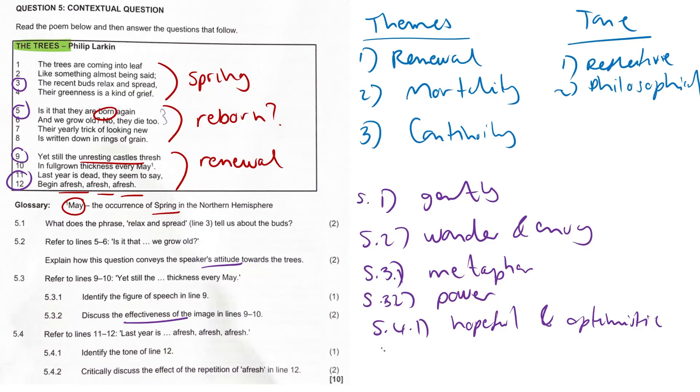5.4.2: Critically discuss the effect of the repetition of afresh in line 12. The repetition emphasizes this unstoppable renewal. It will happen, nature will always find a way. It creates a rhythmic sense of ongoing freshness and vitality. There's a sequence, reinforcing the theme that nature always begins anew despite death or decay. It highlights this endless cycle of rebirth and renewal, like Hinduism almost, karma, reincarnation. Leaving the poem on a very hopeful and uplifting note.